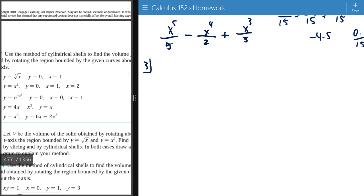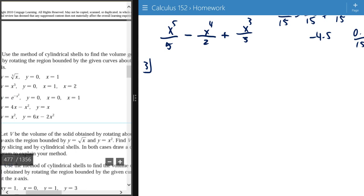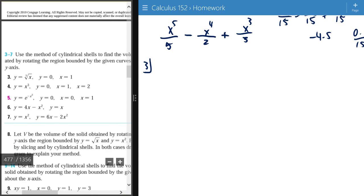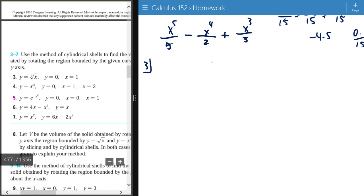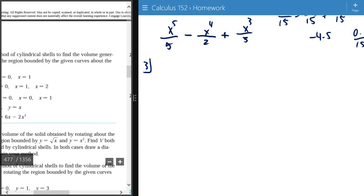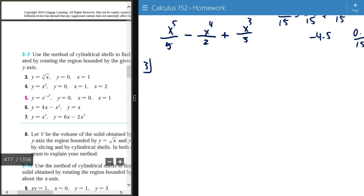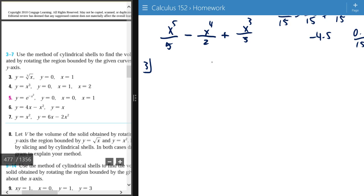Okay so number three, use the cylindrical shells method to find the volume of this given stuff rotating about the y-axis. So we're given y equals x to the one third, y equals zero, and x equals one.